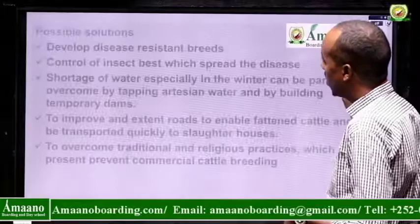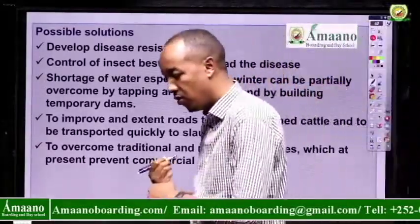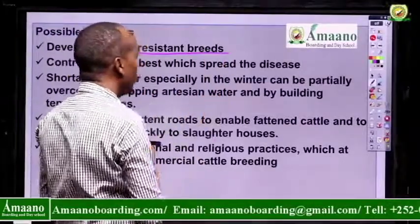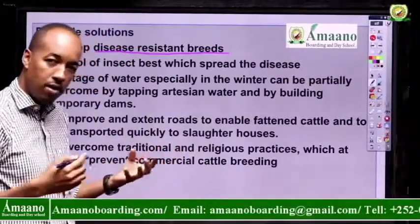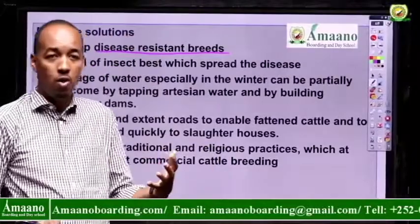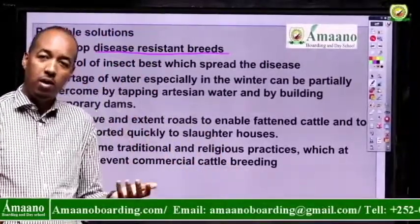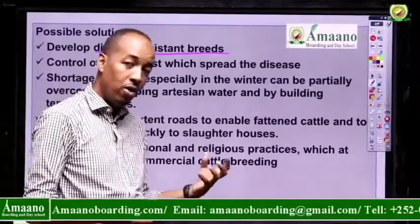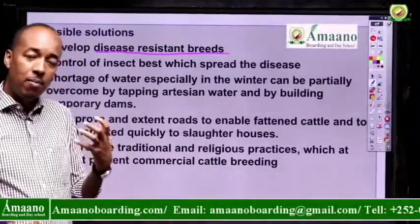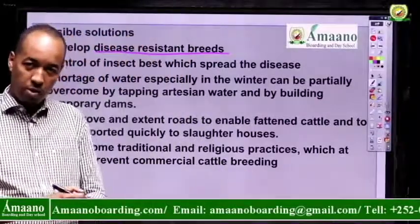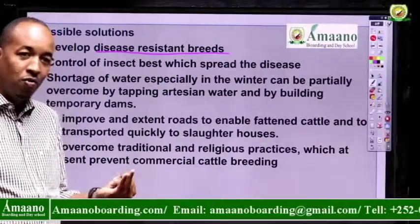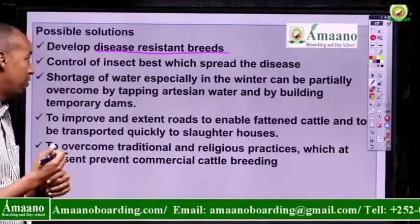Now let us go to the possible solutions. The first solution is to develop disease-resistant breeds. The British did cross-breeding between European cattle and Zebu cattle, resulting in a new breed resistant to diseases. The European cattle is well known for providing a lot of beef and milk, but it was not resistant to diseases. The Zebu or humpbacked cattle is resistant to disease but does not provide a lot of meat. After cross-breeding, the offspring had all the characteristics: providing a lot of milk, a lot of meat, and resistance to diseases.